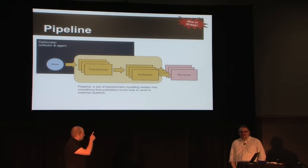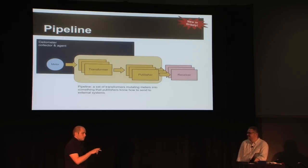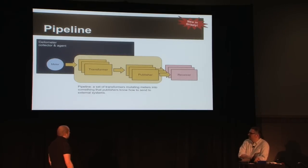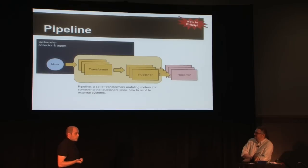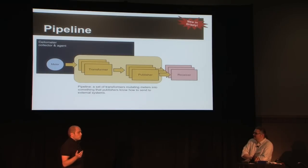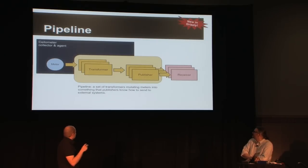We now have pollers and meters for Swift in Grizzly — we didn't have it before, so that's new. The pipeline system is something we designed in Grizzly. The basics are: you get a meter from a notification or from the API, and you're going to be able to transform this meter into another or into more meters if you want to. Then you publish them to one or multiple receivers. Each step can mutate your meters if needed — it's an optional step.